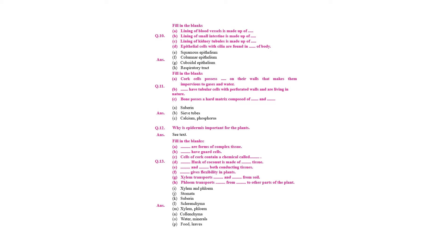Fill in the blanks: lining of blood vessels is made up of squamous epithelium; lining of small intestine — columnar epithelium; lining of kidney tubules — cuboidal epithelium; epithelial cells with cilia are found in the respiratory tract.